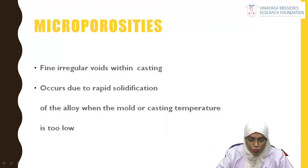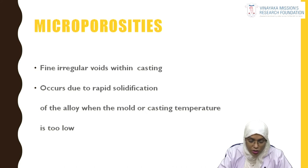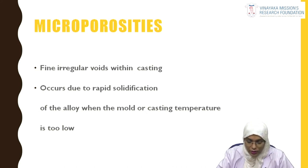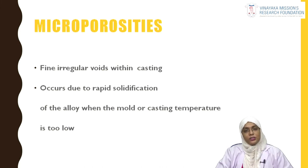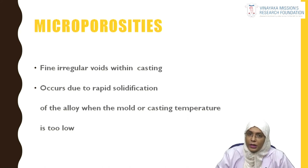Micro porosities are fine, irregular voids within the casting. They occur because of rapid solidification of the alloy when the mold or casting temperature is too low — when the temperature is too low, the alloy solidifies faster and micro porosities result.